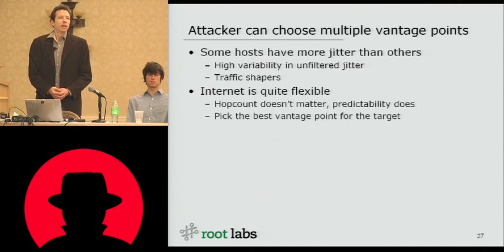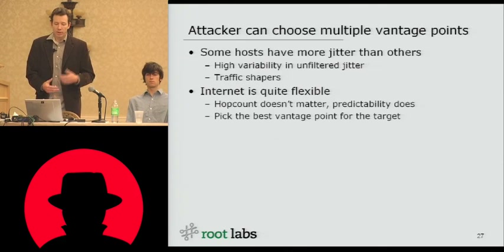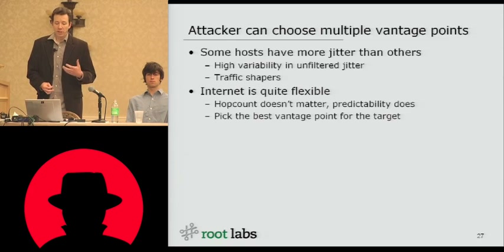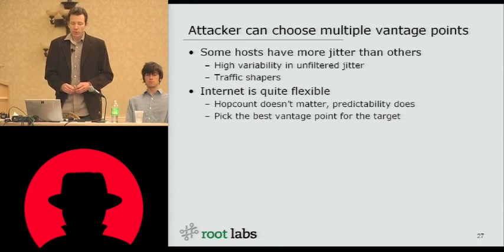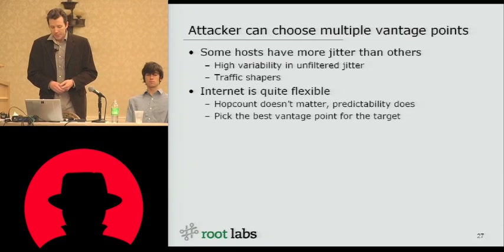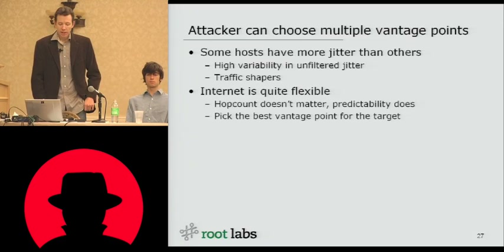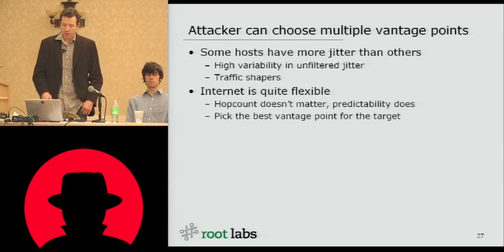So what advantages can an attacker have? A lot of people underestimate the ability of an attacker to choose an advantageous vantage point. Some hosts have more jitter than others, especially on the client side. We'll talk about which host configurations had the most jitter. Others were extremely good, and some were good only at certain times of the day. When you have high variability and unfiltered jitter, you don't want that host. If you can avoid or model the jitter — say you know a cron job kicks off on the server at 3 a.m. — you don't want to run your measurements at 3 a.m. Also, avoid traffic shapers and have as direct and clean a route to the target as possible. The internet is quite flexible; there are many vantage points to choose from, and even if they're at a greater hop count, if they have a higher quality route to the target, they may be a better vantage point.